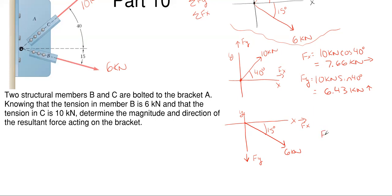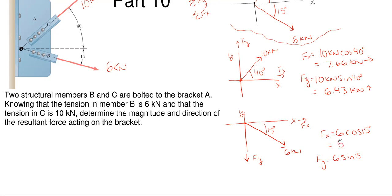So Fx will be 6 kilonewtons times cosine of 15 degrees, once again because the angle is off of the x-axis — it is adjacent, so we use cosine. And then Fy is going to be 6 kilonewtons times sine of 15, because the y is opposite the angle. So 6 cosine of 15 gives me 5.8 kilonewtons of force.